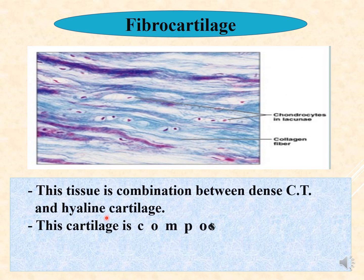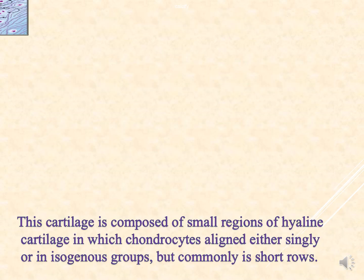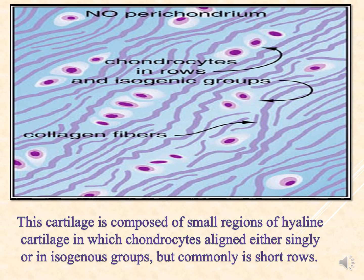The third type is fibrocartilage. This cartilage is a combination of dense connective tissue and hyaline cartilage. It is composed of small regions of hyaline cartilage and thick bundles of dense collagenous fibers. The fibrocartilage matrix contains chondrocytes aligned either singly or in isogenous groups, but commonly in short rows.